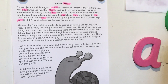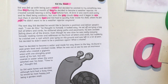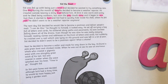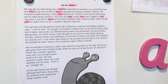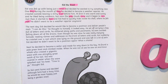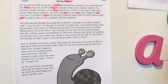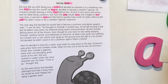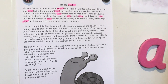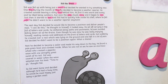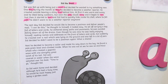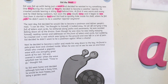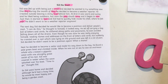Just then it started to hail and Sid had to quickly hide inside his shell where he felt safe. He didn't want to be a weather reporter anymore. The next day Sid decided he would like to become a postman and deliver people's mail. 'I can do this,' he thought to himself. It looked easy. He set off carrying a bag full of letters and cards. He slithered along paths and pavements. He even avoided falling down all the drains.